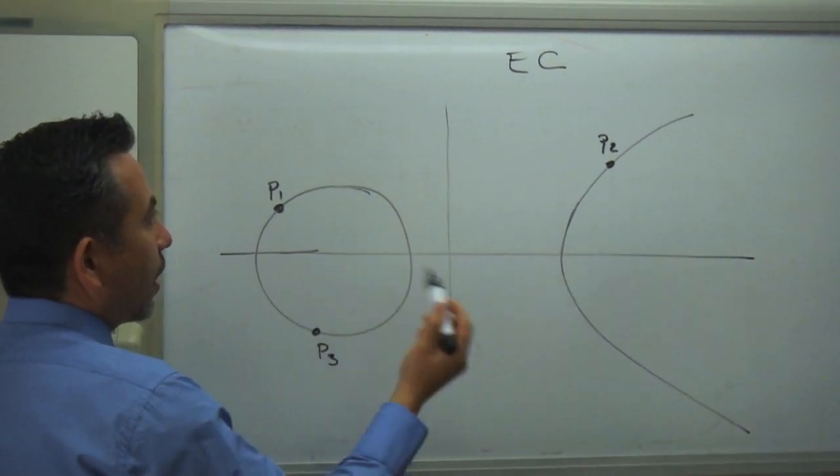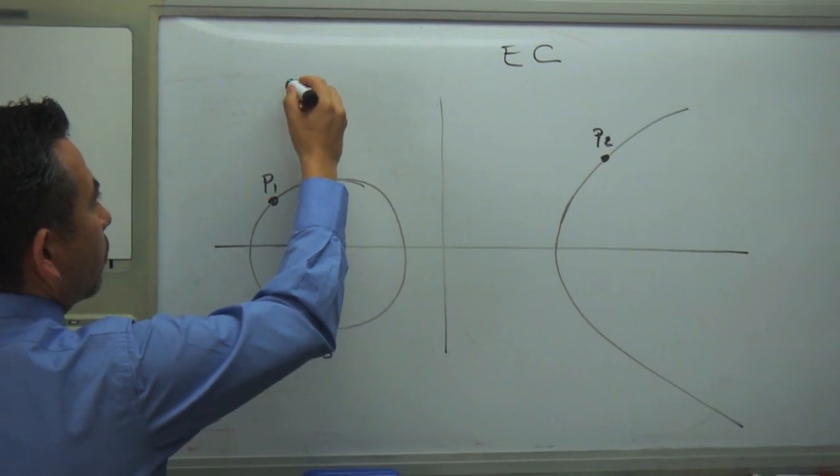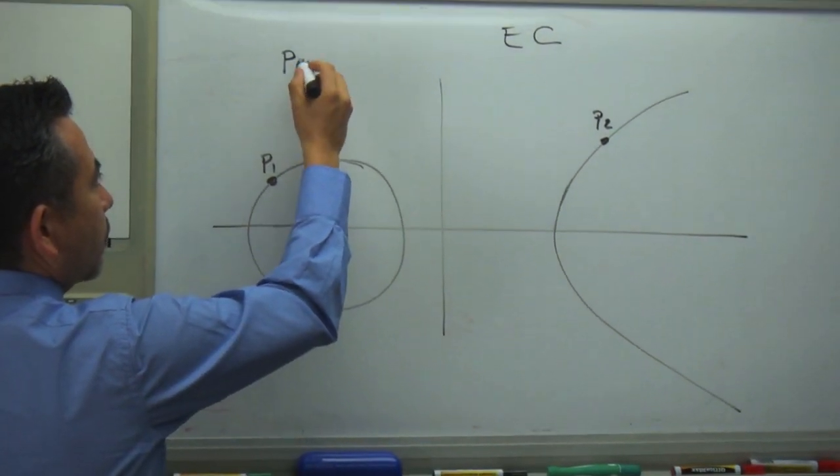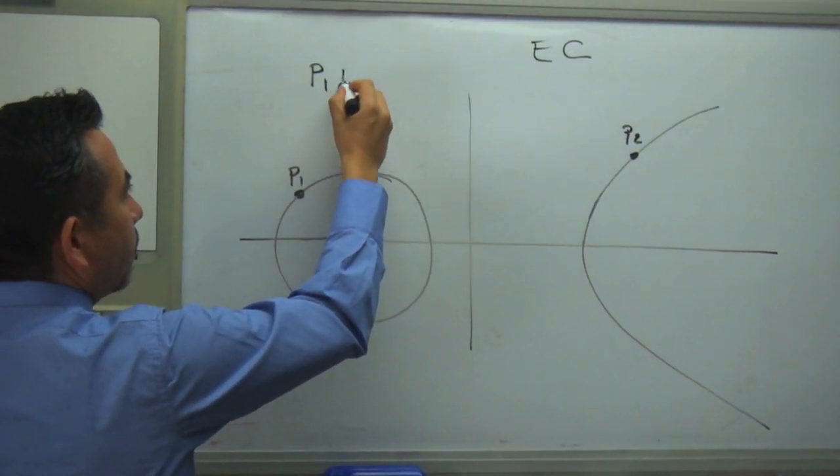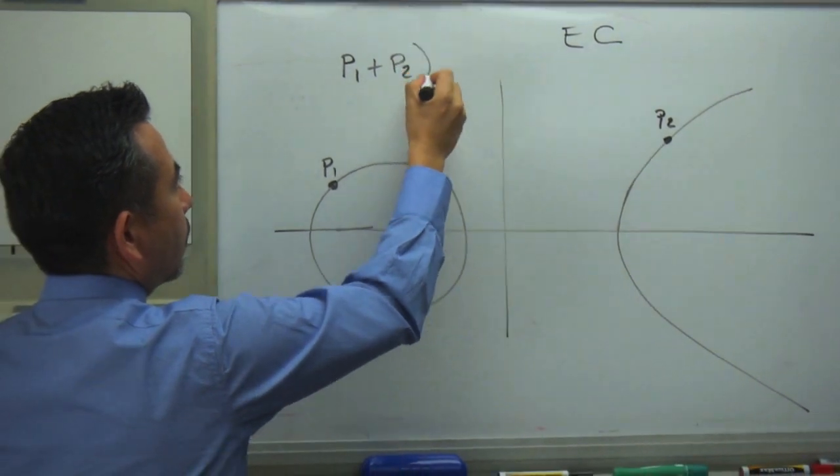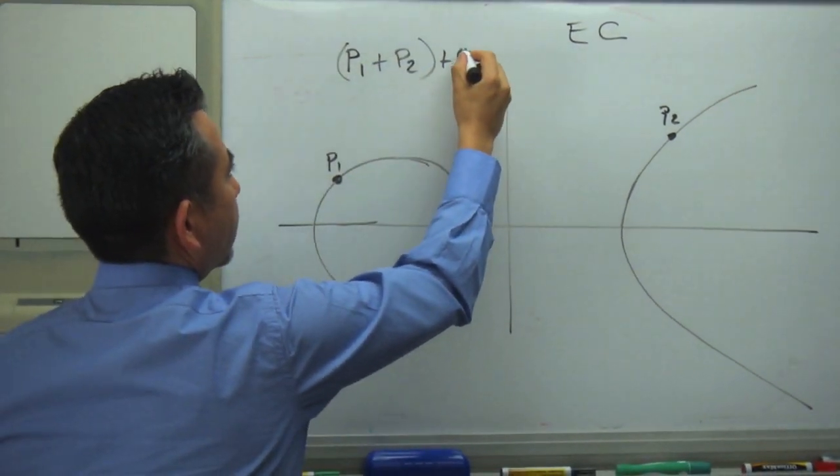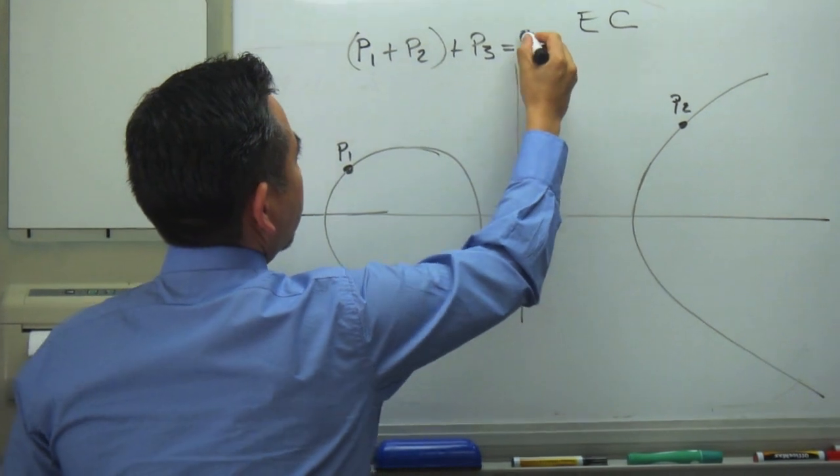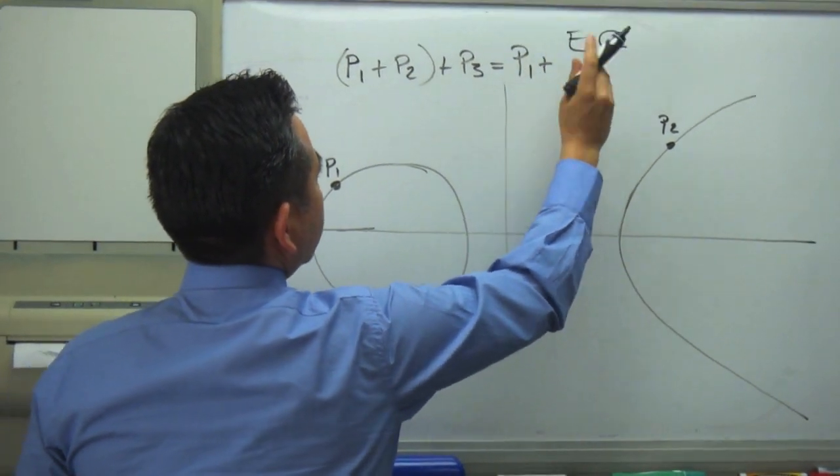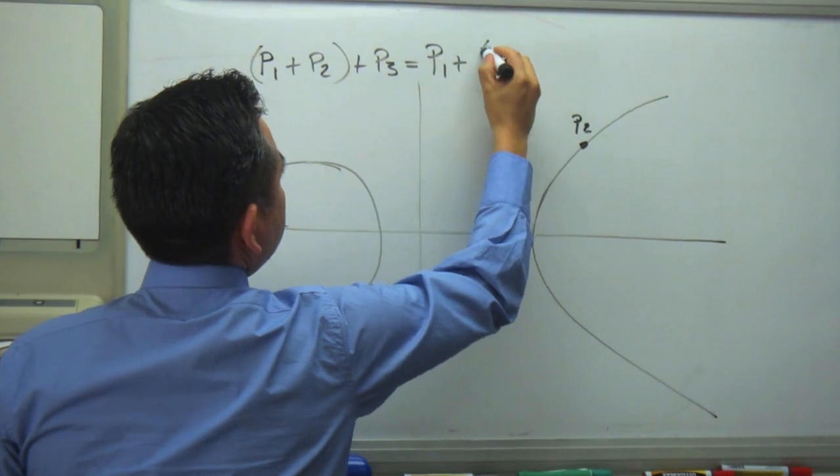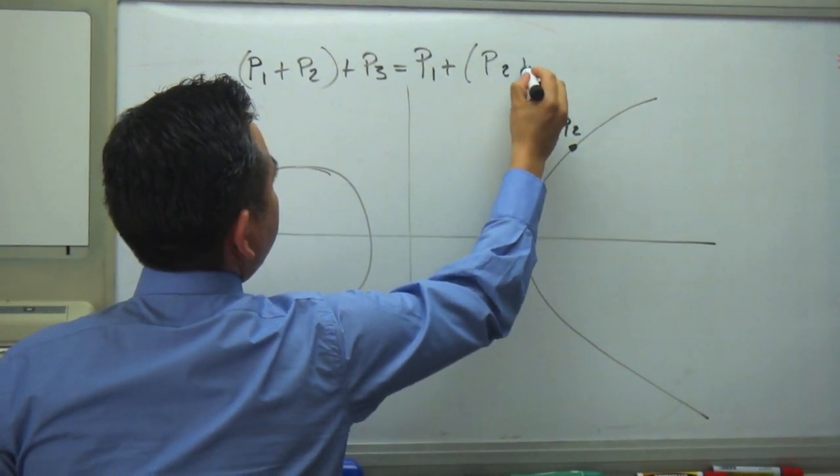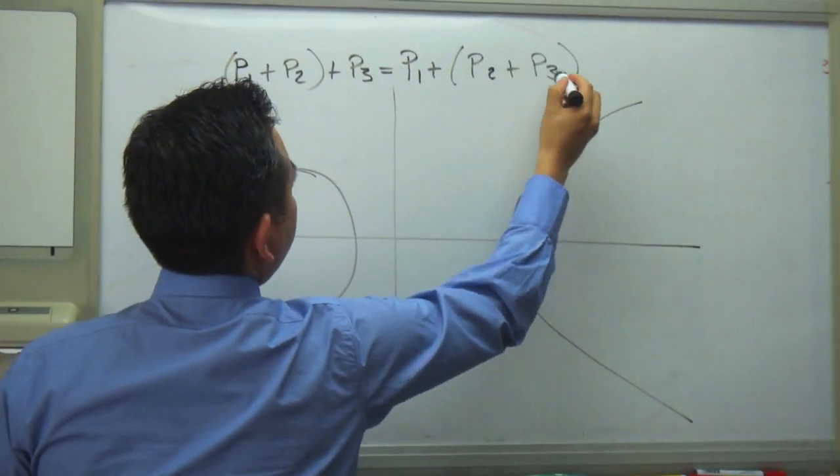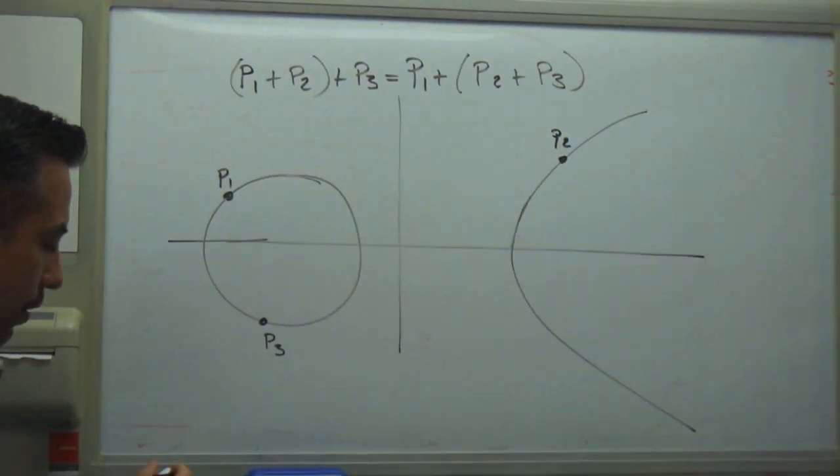So I wanted to prove or to show that associative works like this. So (P1 + P2) + P3 is equal to P1 + (P2 + P3). So this is what we wanted to show.